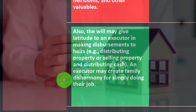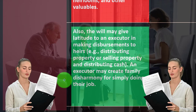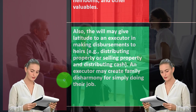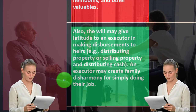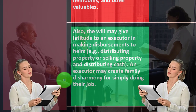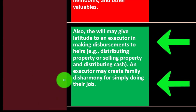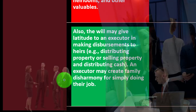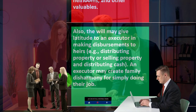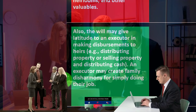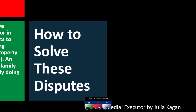The will may give latitude to the executor in making disbursements — distributing property or selling property and distributing cash. If someone takes valuables before the process, you can't liquidate them to settle liabilities and then distribute properly to heirs. An executor may create family disharmony simply by doing their job — enforcing the proper process is necessary but difficult.